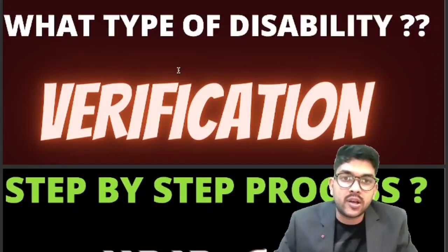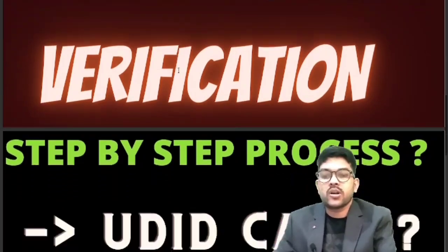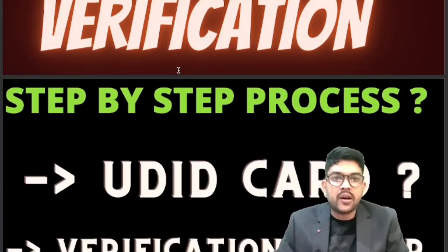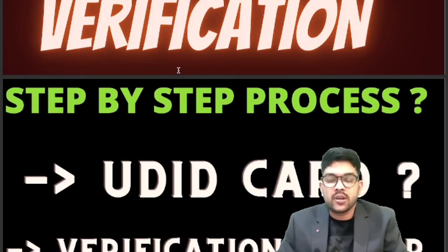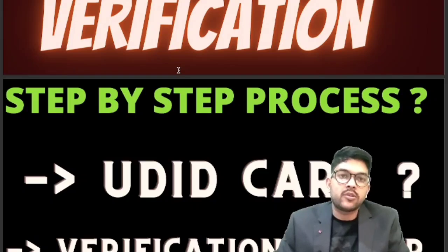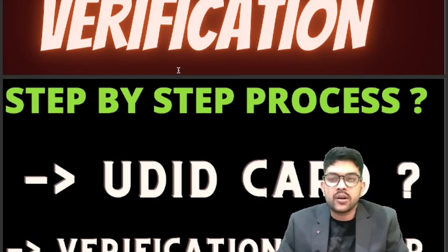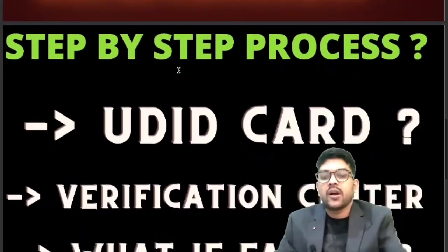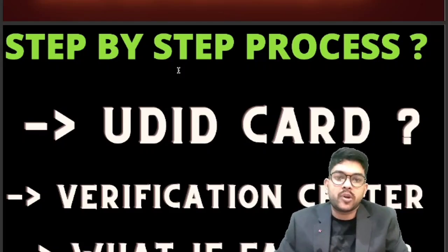Regarding verification — there will be a physical verification process for your admission. To claim the reservation you have to verify yourself. If you have the UD ID card, they have started online verification, but once you join the college they will also do it offline. The important thing is that you need to have your certificate of 40 percent disability. If you don't have the UD ID card, that is also okay, as some states don't provide it simultaneously. You need to get the certificate in the required format. Before counseling there will be an option to choose a verification center and date.